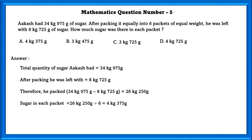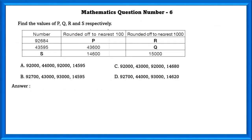Sugar in each packet is equal to 26 kgs 250 grams divided by 6, which is equal to 4 kgs 375 grams. Mathematics question number 6. Find the values of P, Q, R and S respectively.